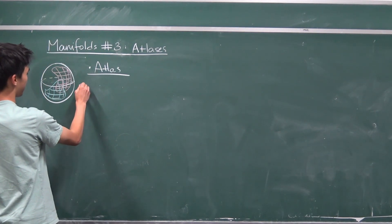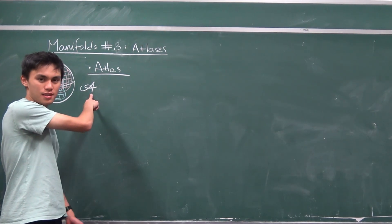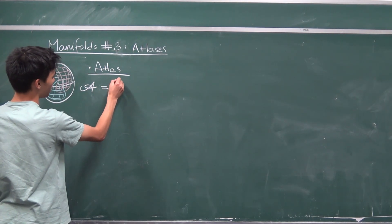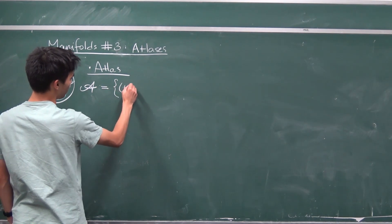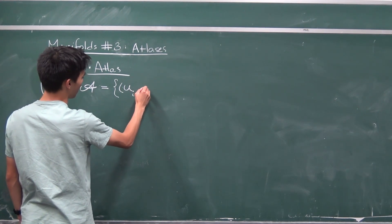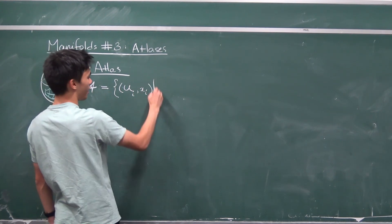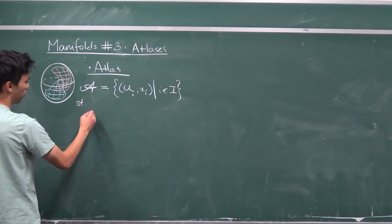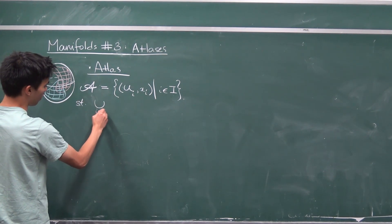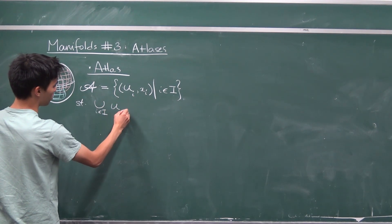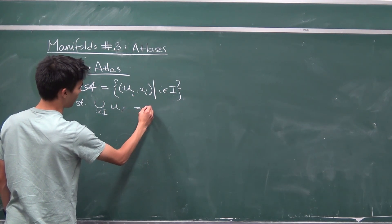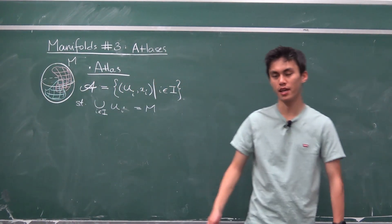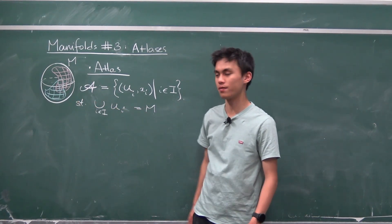An atlas is usually given the symbol curly A — in LaTeX this is the mathscr font for the capital letter A. It's going to be the set of a bunch of charts: (U_i, x_i), where i can come from any index set. It's just a collection of charts, and you require that the union over i of the chart domains U_i recovers your whole entire manifold M. That's exactly an atlas — it gives you all the charts needed to describe a topological manifold.